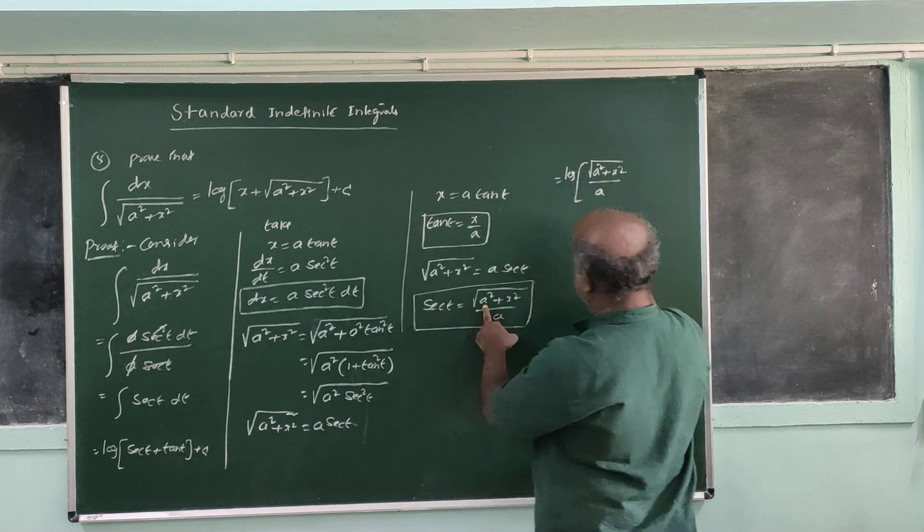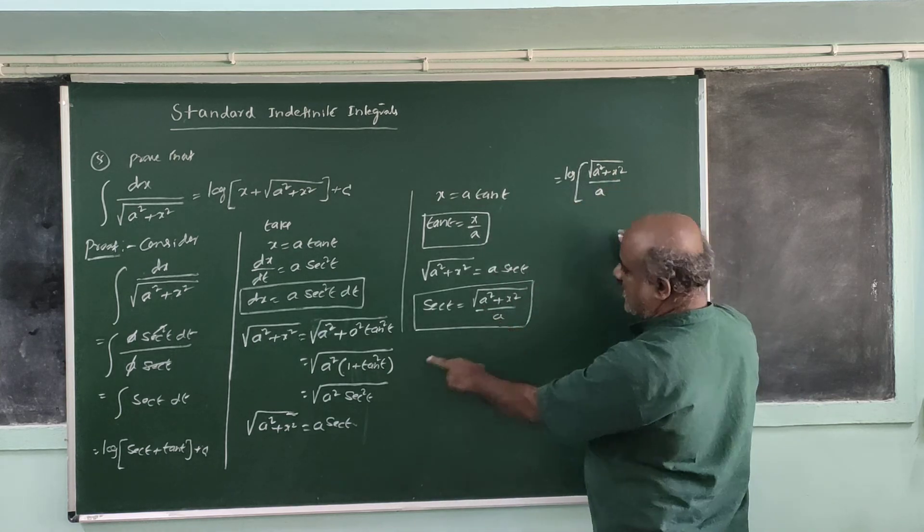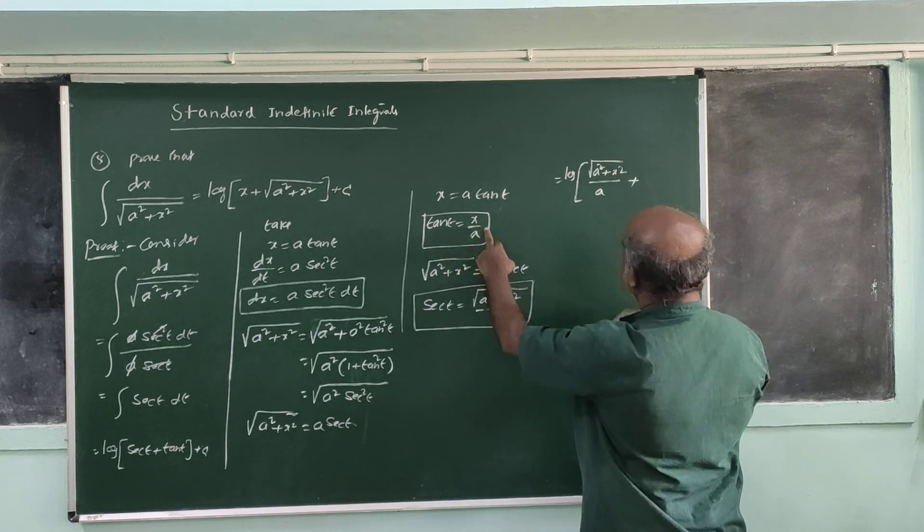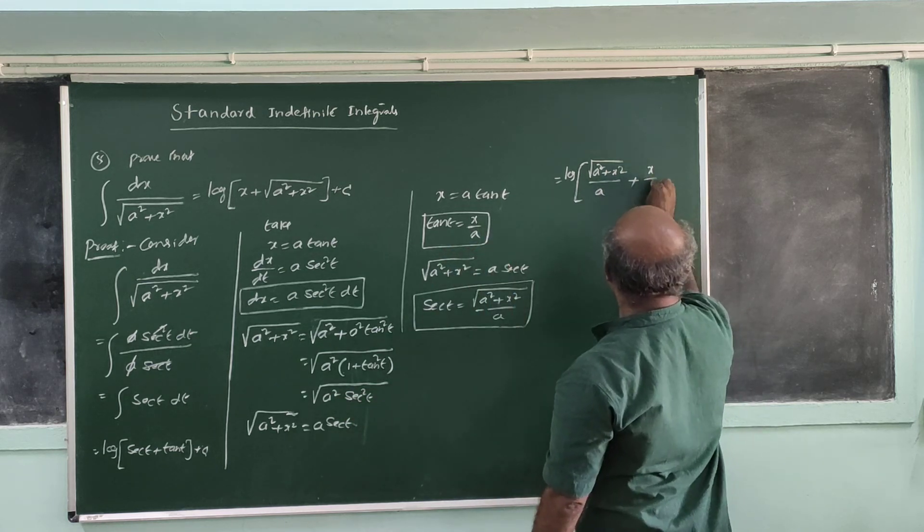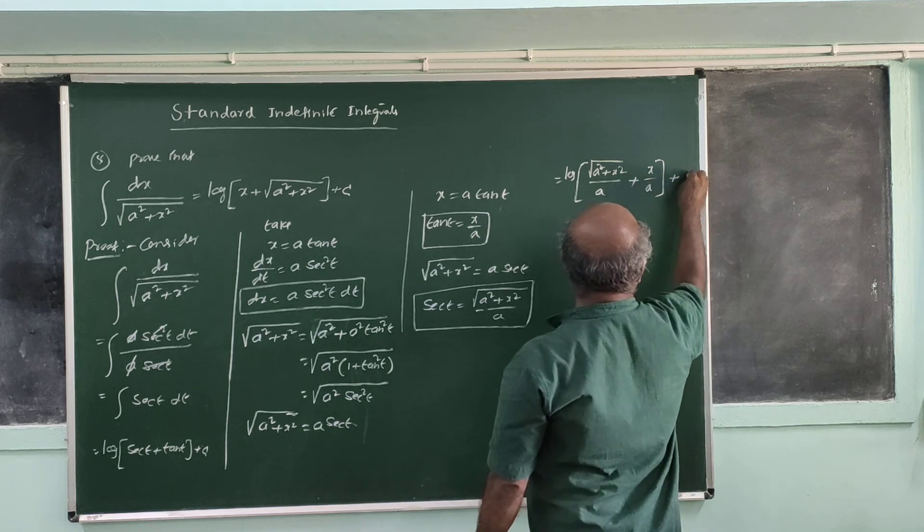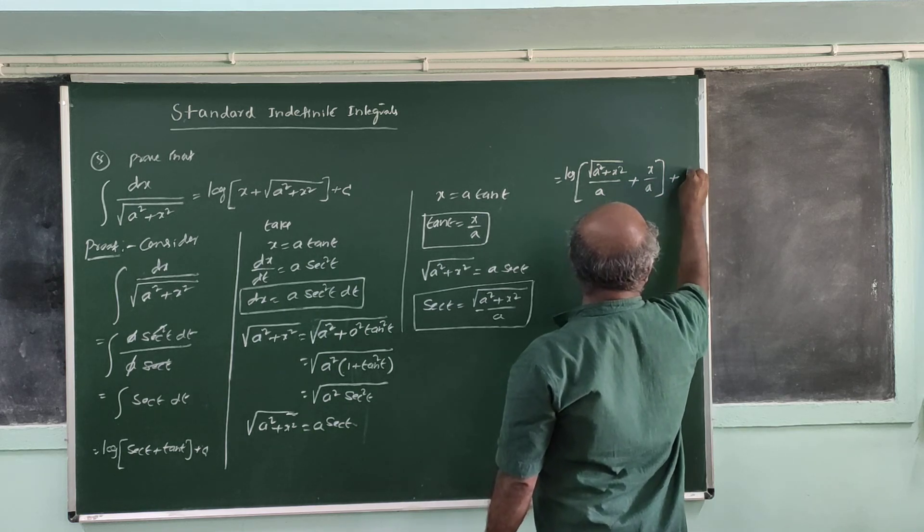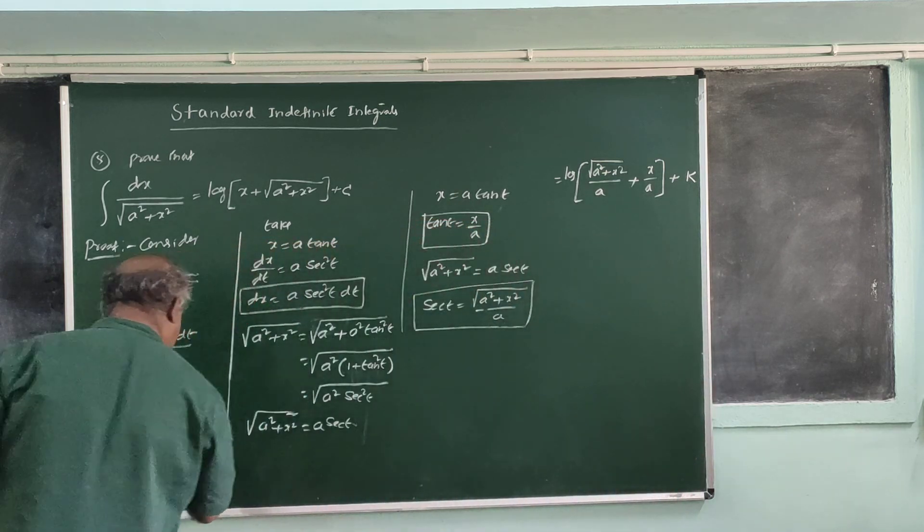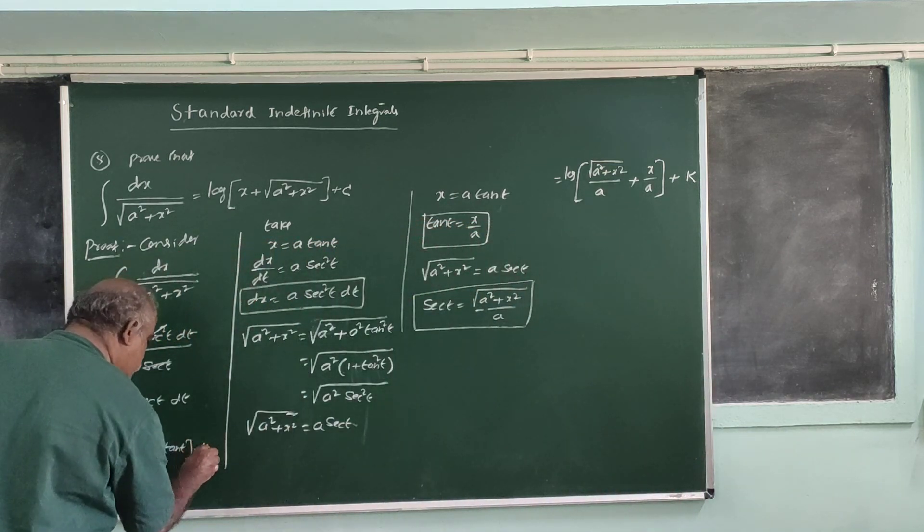Now substituting back, secant t is root of a squared plus x squared divided by a, and tan t is x divided by a.